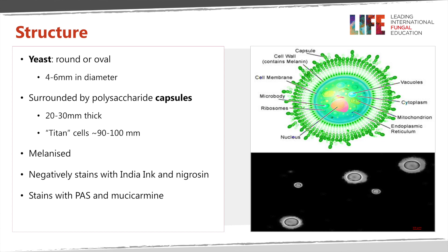The organism is melanised — it has melanin in its cell wall which confers resistance to host effector cells like neutrophils and macrophages. The use of India ink shows the presence of this capsule because the India ink particles cannot penetrate into the capsule. They're excluded by this capsule, so in this picture here on the bottom right hand side the capsule is shown as a halo surrounding the yeast cell. In histopathological sections we can clearly see the organism when those sections are stained with PAS, mucicarmine and other stains.